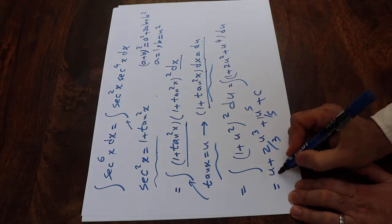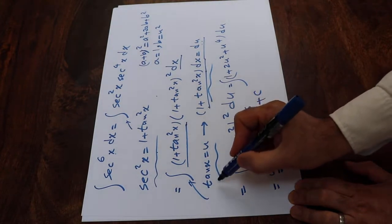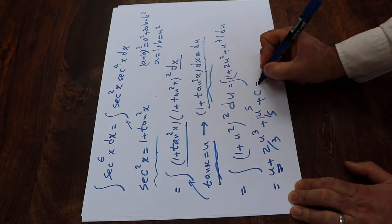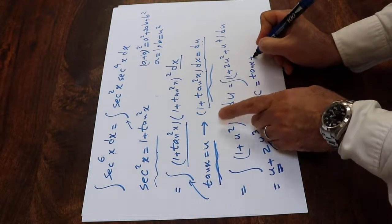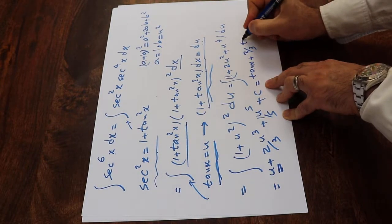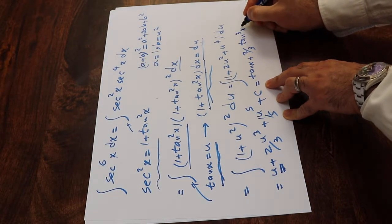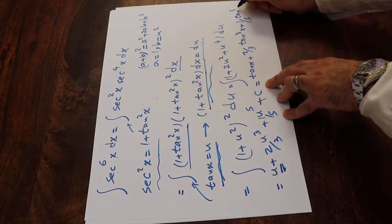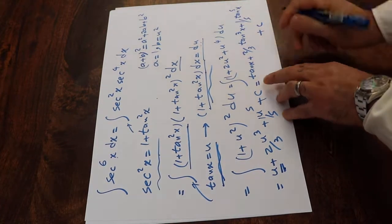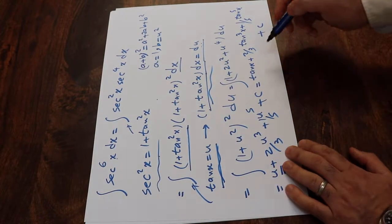All you need to do here is substitute this parameter u with the definition of u, which is tan x. Therefore, this integral will be equal to tan x plus 2/3 tan³x plus 1/5 tan^5x plus c, which is the constant of the integral.